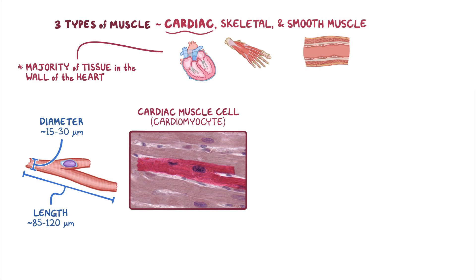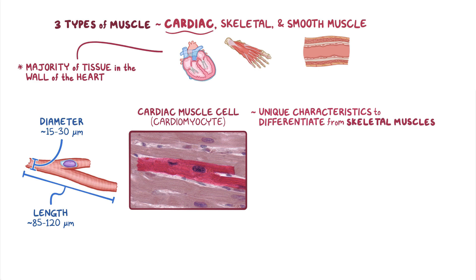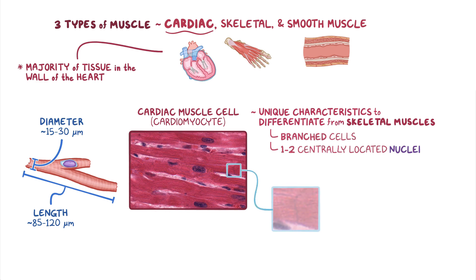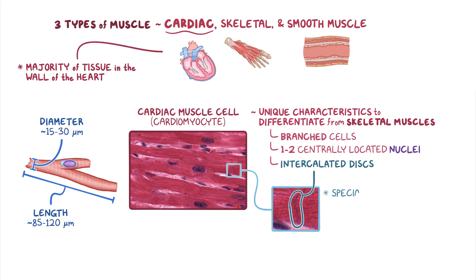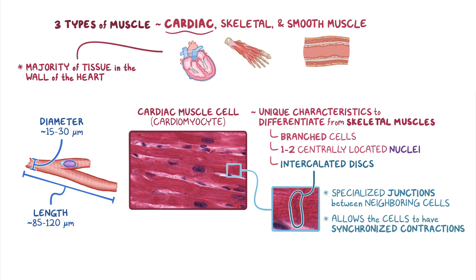Histologically, cardiac muscles have quite a few unique characteristics that make it easier to differentiate them from skeletal muscles. Unlike skeletal muscles, cardiac muscle fibers are branched cells with only 1 to 2 centrally located nuclei. Also unique to cardiac muscles are the intercalated discs, which are the specialized junctions between neighboring cells that allow the cells to have synchronized contractions and pump blood out of the heart efficiently.